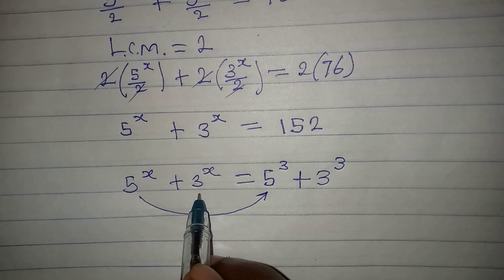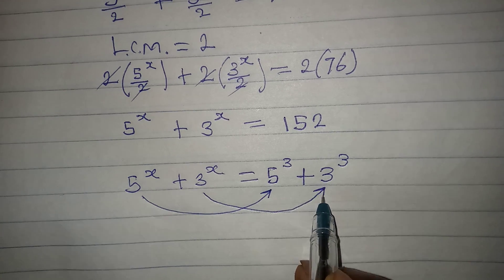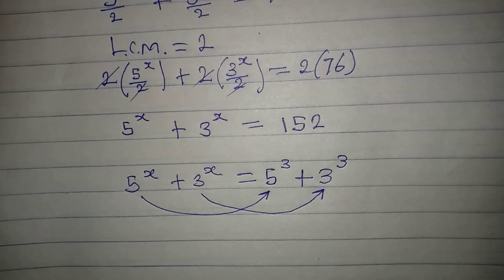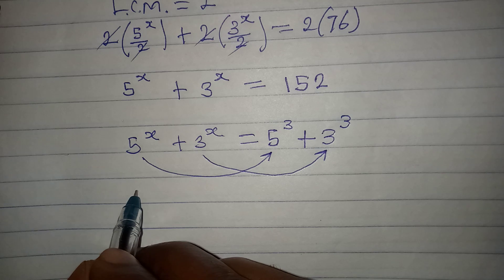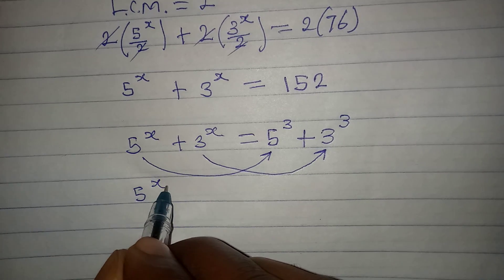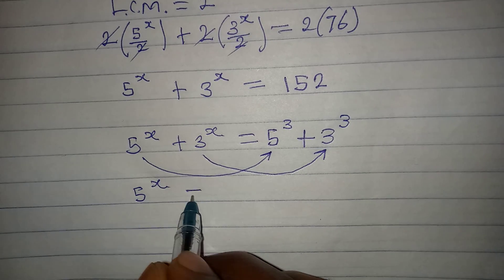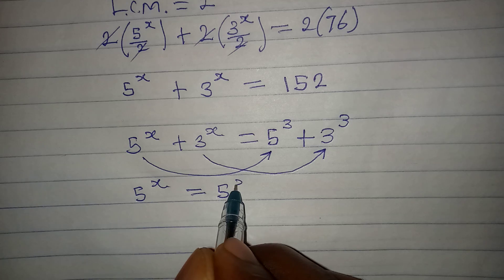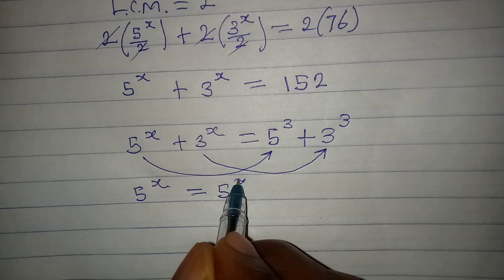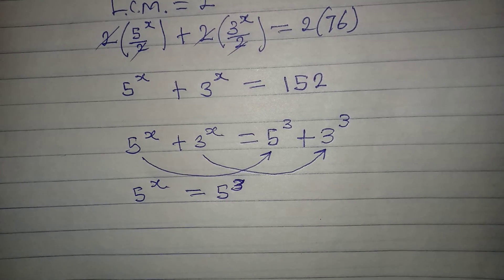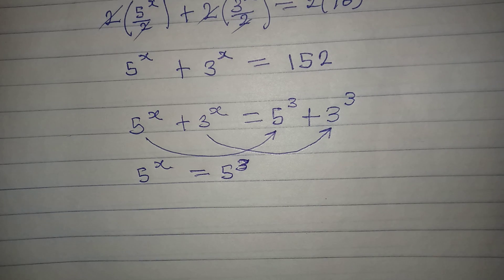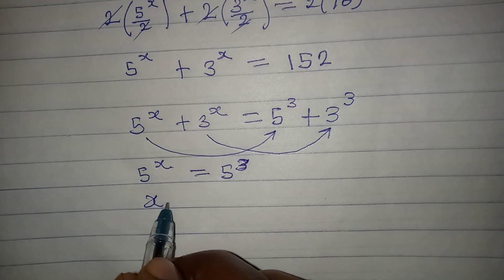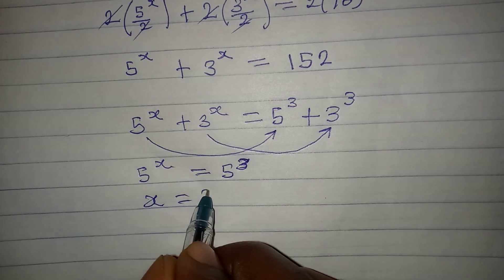Now let's compare the left and right-hand sides. We can compare term by term: 5 to the power of x is equal to 5 to the power of 3. The bases are the same, therefore the powers must be equal, so x is equal to 3.